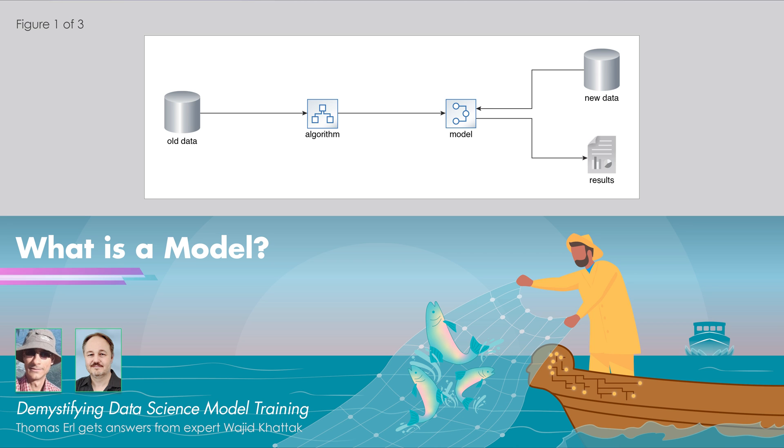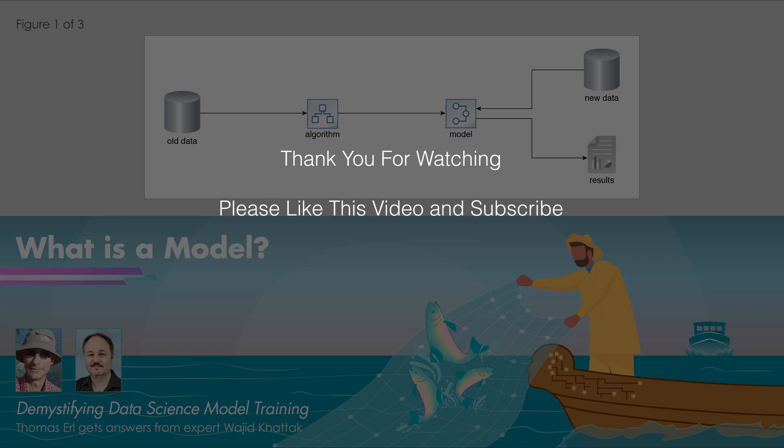By default there won't be any model. We select the algorithm, then we start. At that time we will have a very bare bone model that is not really of any use. Selecting the algorithm kind of internally gives us a model but that's of no use. Then we start training the model and it becomes useful, and it exists as a complex data structure that can be called via an API to make predictions.